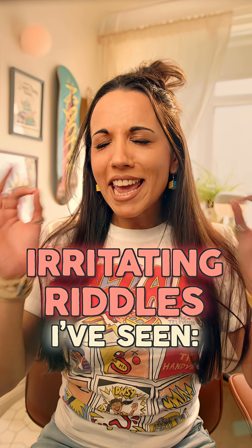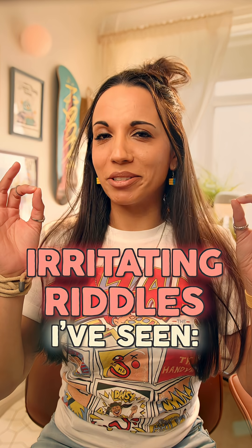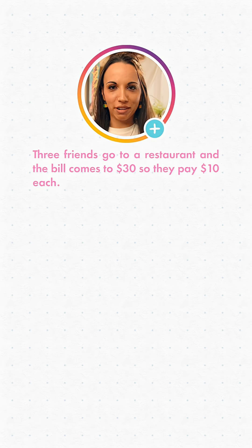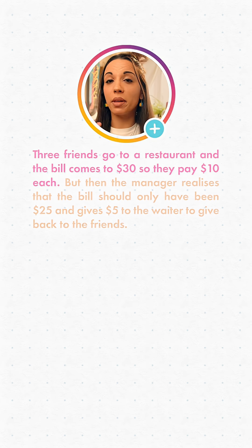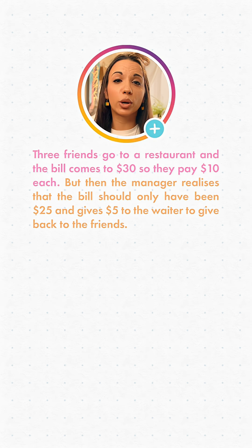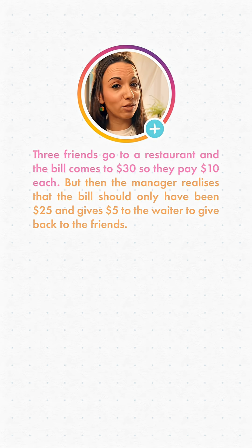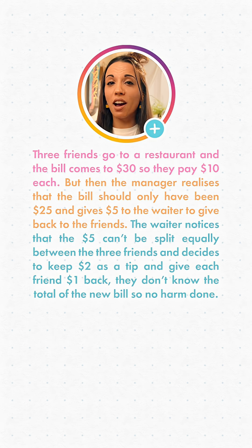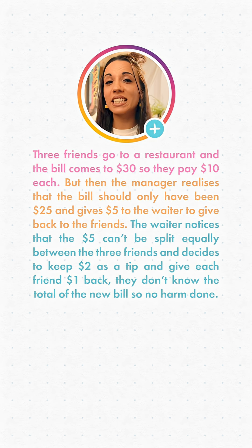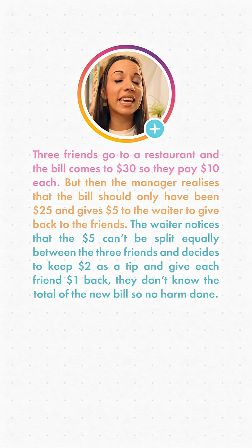This is one of the most irritating riddles I've seen. Three friends go to a restaurant and the bill comes to $30, so they pay $10 each. But then the manager realises that the bill should only have been $25 and gives $5 to the waiter to give back to the friends. The waiter notices that the $5 can't be split equally between the three friends and decides to keep $2 as a tip and give each friend $1 back.